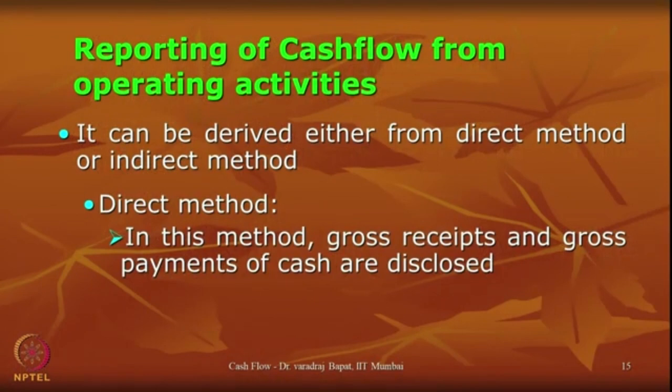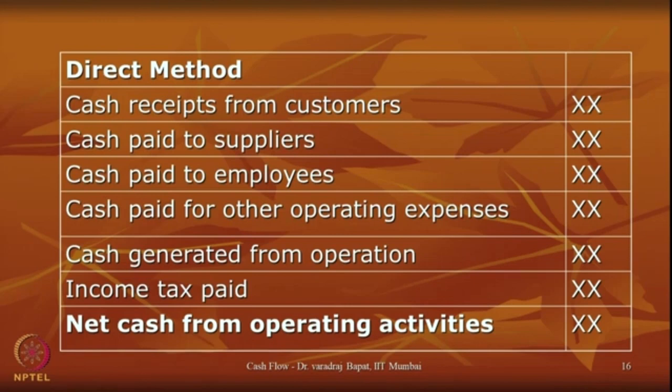Now, before going further into investing activities, let us understand how operating activities are reported. There are two methods: the direct method and the indirect method. In the direct method, gross receipts and gross payments of cash are reported. Cash receipts from customers and cash paid to suppliers, employees, etc., are all shown as total amounts received or paid. The net amount is cash generated from operations before taxes, and after deducting income tax paid, you get net cash from operating activities.